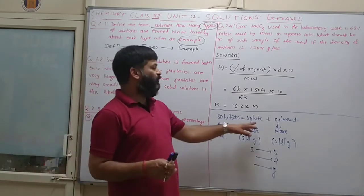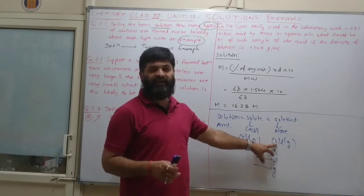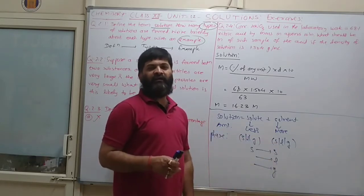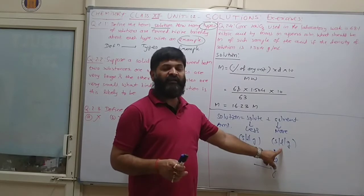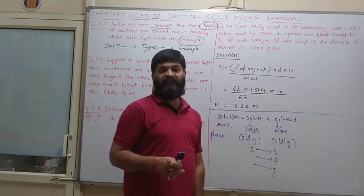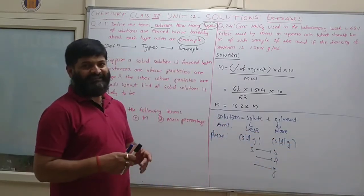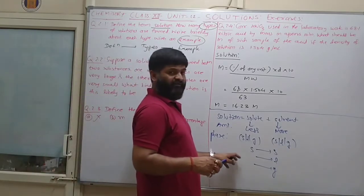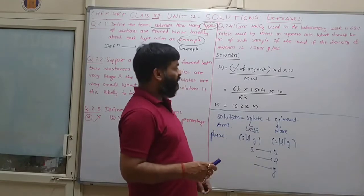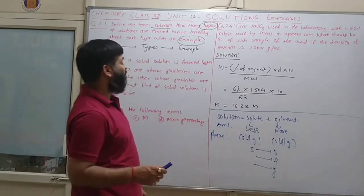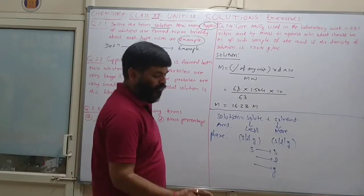If the solvent is in a solid state, we get a solid solution. If the solvent is in a liquid state, then a liquid solution. If gas, then a gaseous solution. By combining solute and solvent in all three phases, we get 9 different types of solutions.